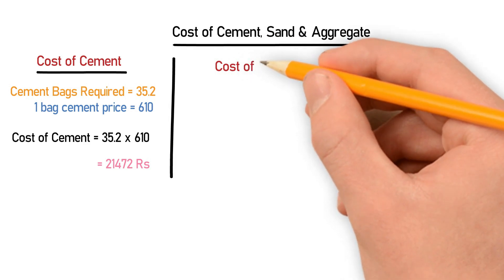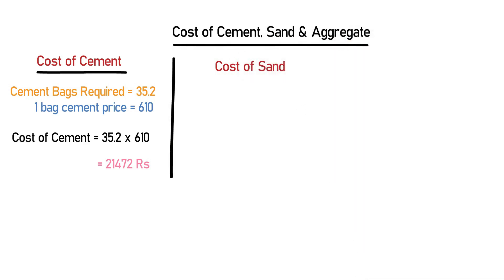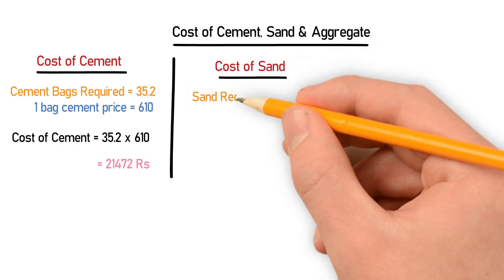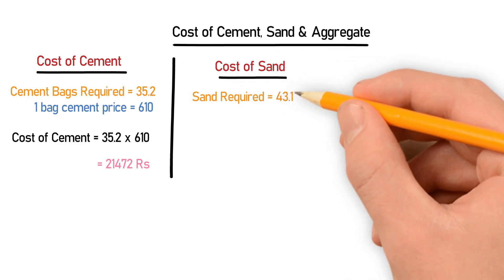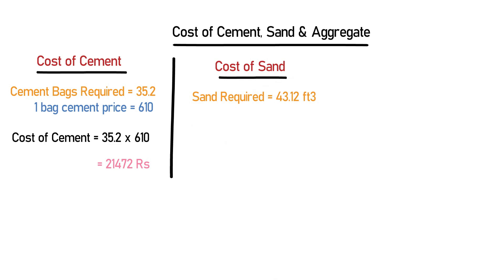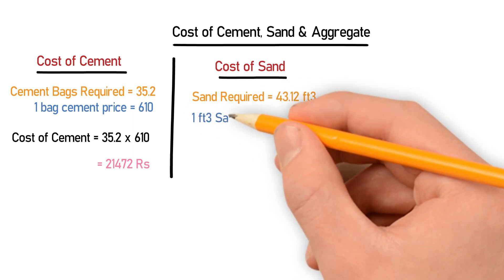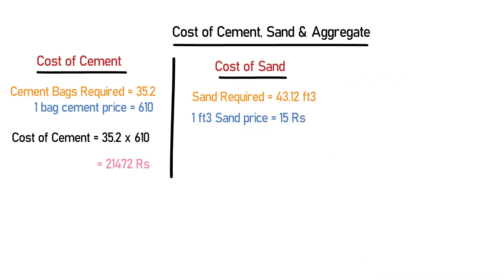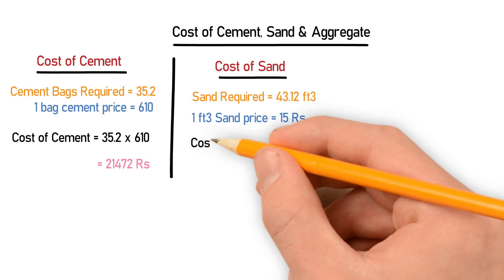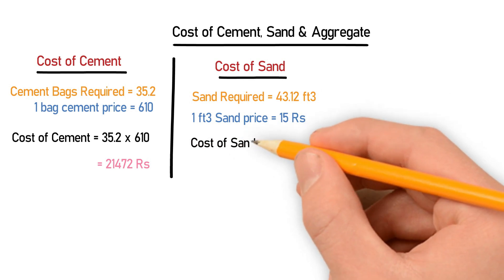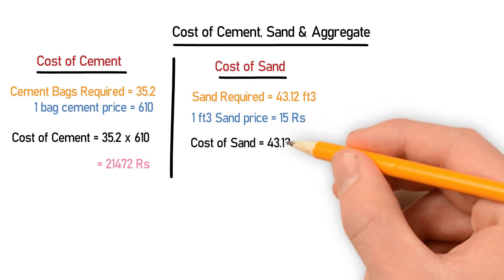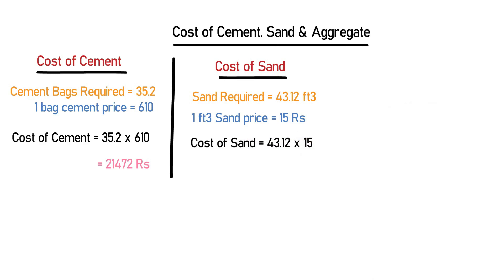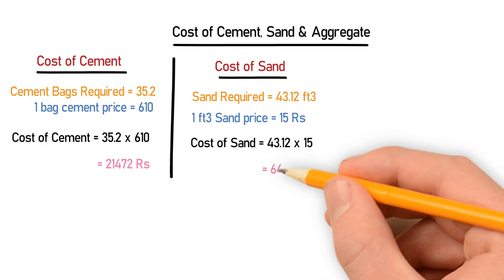Let's calculate the cost of sand. We need 43.12 cubic feet of sand. The price of one cubic foot of sand from the market is 15. So the cost of sand = 43.12 × 15 = 647.